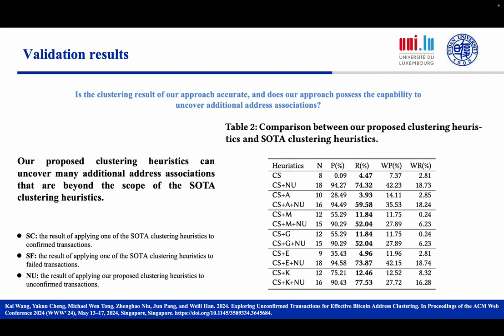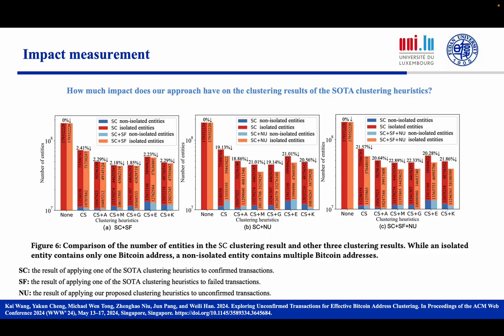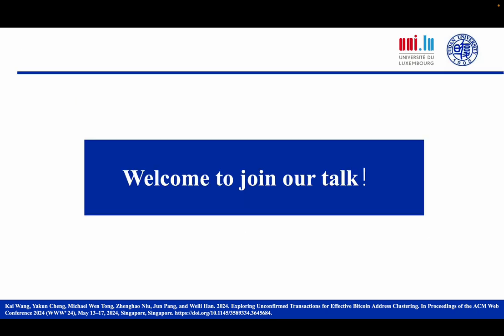Our proposed clustering heuristics can uncover many additional address associations that are beyond the scope of the state-of-the-art clustering heuristics. Even in the smallest improvement cases, CS plus M and CS plus G, our proposed clustering heuristics still improve recall by three times with higher precision. Our approach reduces the number of entities by more than 20%, reflecting its ability to reduce errors where addresses belonging to the same entity are wrongly clustered into multiple entities. Our findings show the value of unconfirmed transactions for Bitcoin address clustering and further reveal the challenges of achieving anonymity in Bitcoin.